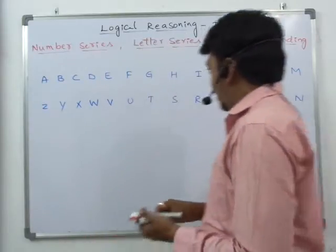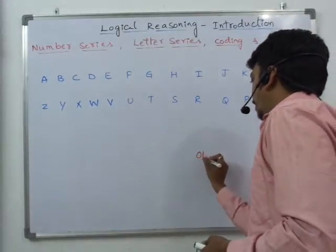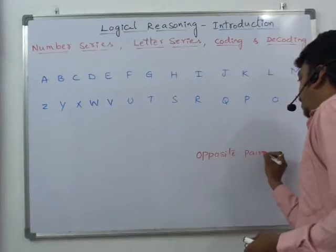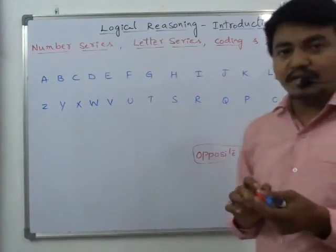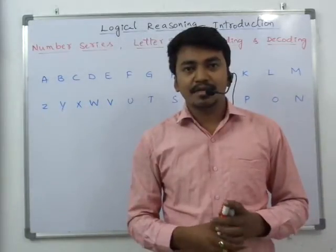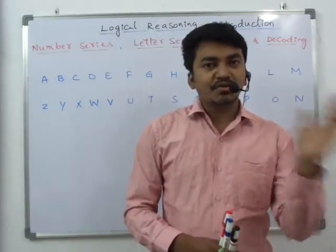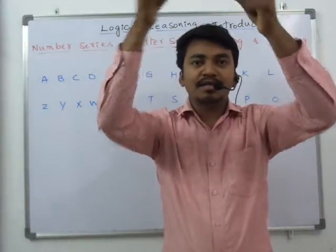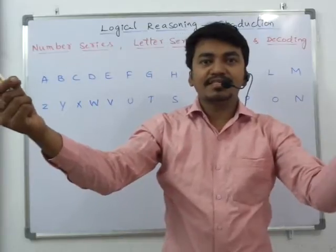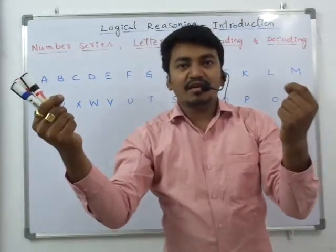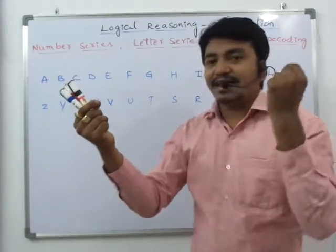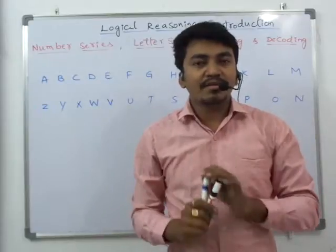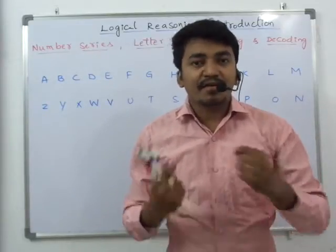Opposite pairs means: if you count the alphabet from A to Z, A is the first letter. If you count from Z to A, Z is the first letter. So A and Z form an opposite pair. Similarly, B is the second letter and Y is the second letter from the end — B and Y form a pair. C is the third letter from the beginning and X is the third letter from the end — C and X form a pair. We will call these opposite pairs.